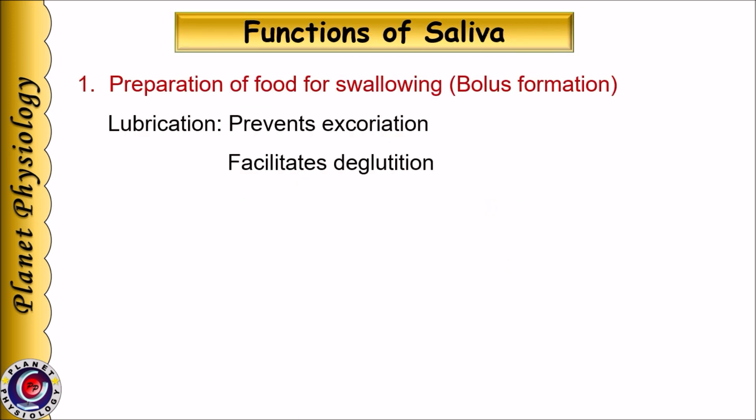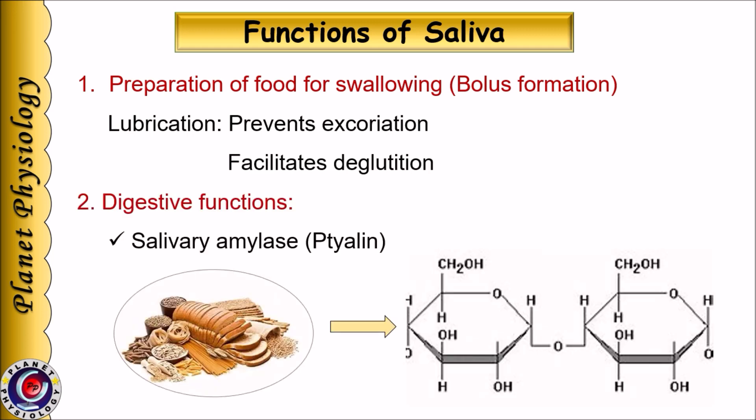Now let us study the functions of saliva. First, mucin in saliva helps to form a bolus and prepares food for swallowing. This also helps in lubrication of the oral cavity and prevents excoriation of the oral mucosa. Salivary amylase initiates carbohydrate digestion — it converts starch to maltose, which imparts a sweet taste to starchy food. Only about 5% of carbohydrate digestion takes place in the oral cavity, as food remains there for only a short duration.